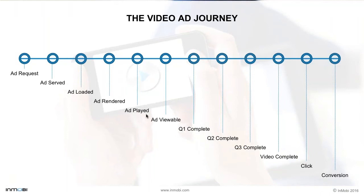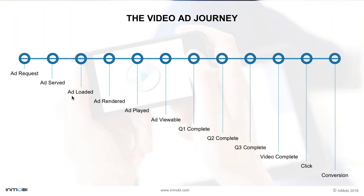Unlike banner ad assets, which may be as light as 10 KB, video ad assets range from 2 MB to 10 MB. Once the ad network registers the ad request, it will serve the ad — meaning the network's ad server has sent a video ad response, but it does not mean the ad has reached the mobile device or been loaded. Once the ad response reaches the device, it is considered loaded. For example, if it's a VAST tag, it involves unwrapping the tag and extracting the actual video asset, which may be an MP4 file. Exchanges may restrict the number of wrappers allowed in a VAST tag.